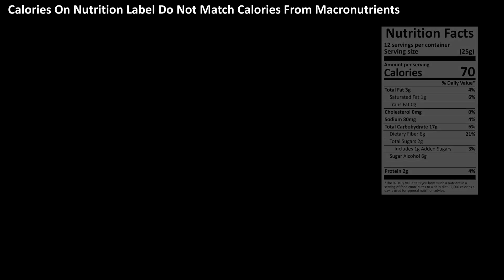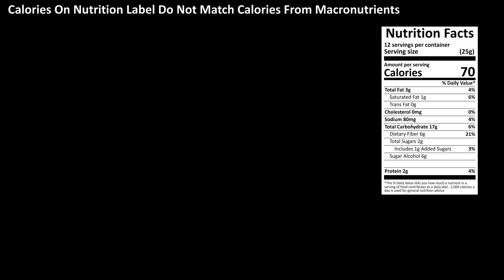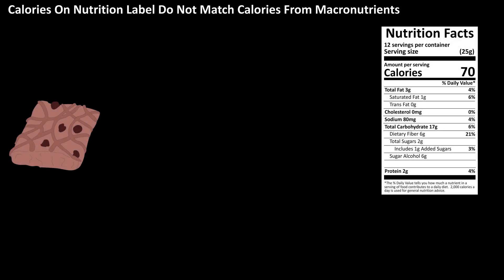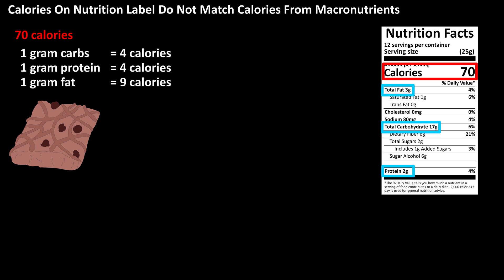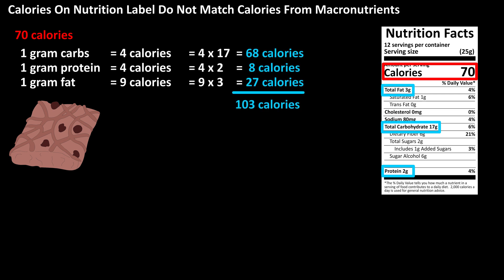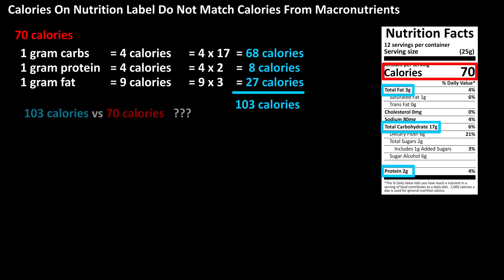If we look at a food label, for instance this one here, it is for a small brownie, and it lists the calories at 70. Now if we look at the macronutrients — carbohydrates, protein, and fats — we are taught that 1 gram of carbohydrates equals 4 calories, 1 gram of protein also equals 4 calories, and 1 gram of fat equals 9 calories. I've done the math here on the screen, and we get a total of 103 calories. 103 calories versus 70 calories — that's quite a difference. But why is that?